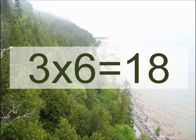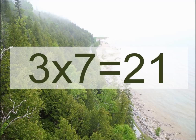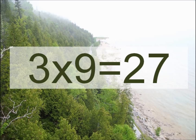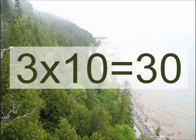Three times six equals... Eighteen. Three times six equals... Eighteen. Three times seven equals twenty-one. Three times seven equals twenty-one. Three times eight equals twenty-four. Three times eight equals twenty-four. Three times nine equals twenty-seven. Three times nine equals twenty-seven. Three times ten equals thirty. Three times ten equals? Thirteen.